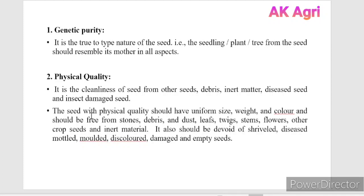The seed with physical quality should have uniform size, weight, and color, and it should be free from stones, debris, dust, leaves, twigs, stems, flowers, other crop seeds, and inert material.